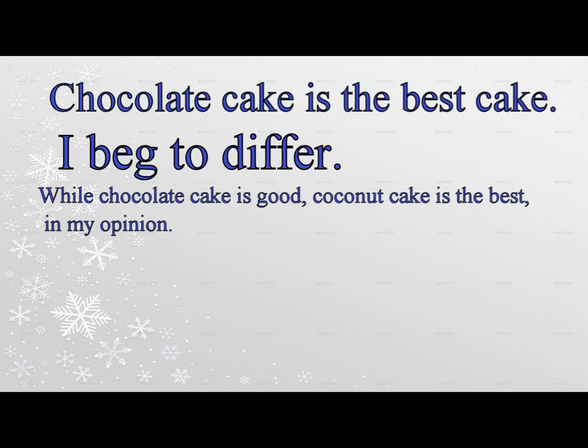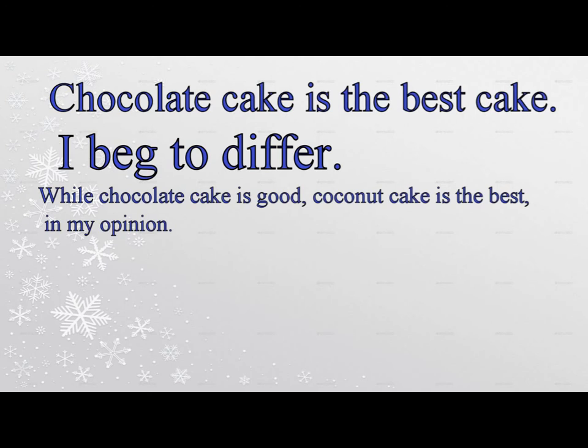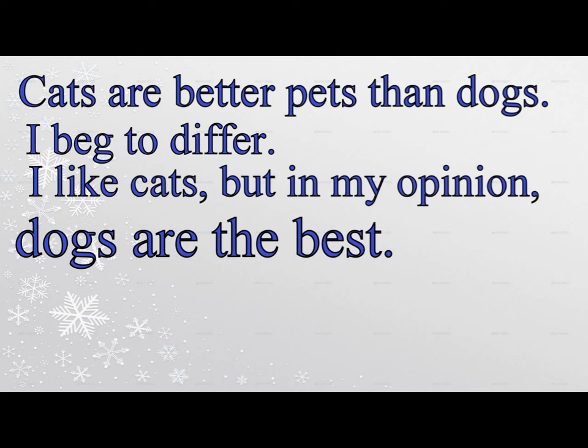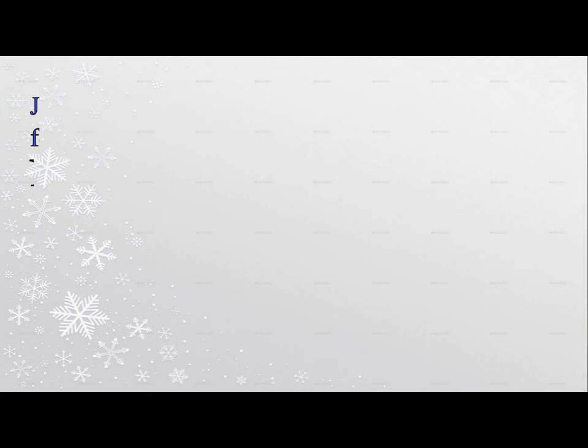'I beg to differ' — this phrase is usually considered a strong, formal, and very polite phrase used for disagreements. Examples: 'Chocolate cake is the best cake.' 'I beg to differ. While chocolate cake is good, coconut cake is the best in my opinion.' 'Cats are better pets than dogs.' 'I beg to differ. I like cats but in my opinion dogs are the best.' 'No way' — this is an informal way to disagree, usually expressing surprise and disbelief. Examples: 'Jeff says that he can memorize everything for a test in just an hour.' 'No way.' 'Kelly says that she can run a mile in 5 minutes.' 'No way.'